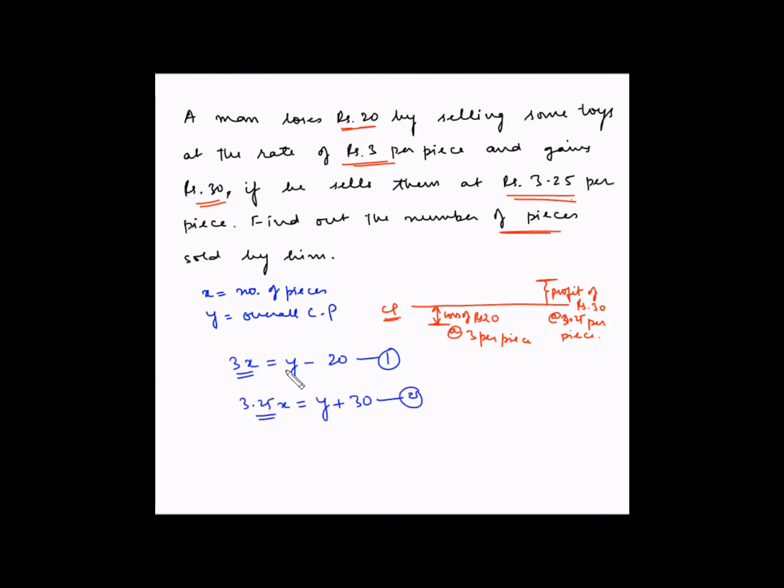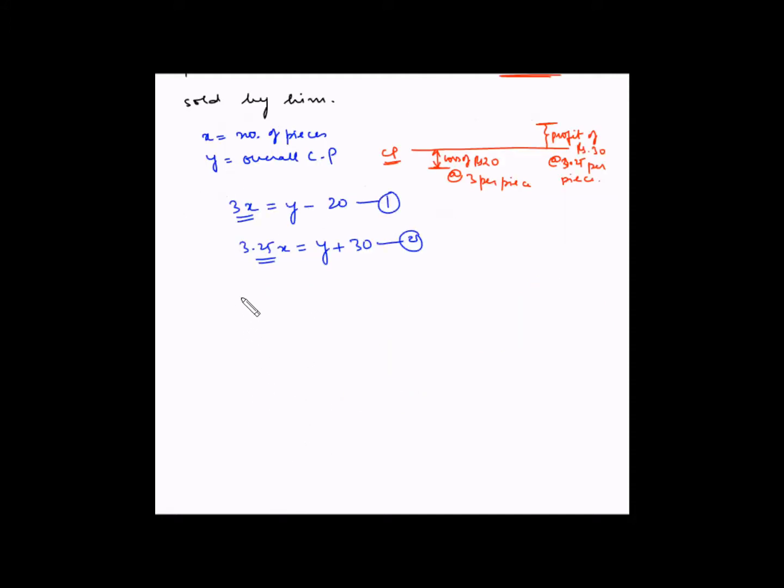Now here we have two variables X and Y and we have two equations. Generally that is the rule of thumb: you should have the number of equations equal to the number of variables that you have and then you will be able to solve it. So let's now from this equation find out what is the value of Y and then we will substitute Y here with that. This equation will become in terms of X and then we will be able to solve it easily.